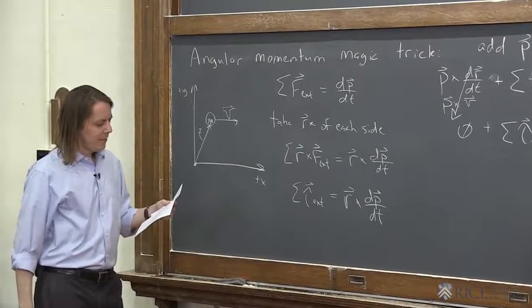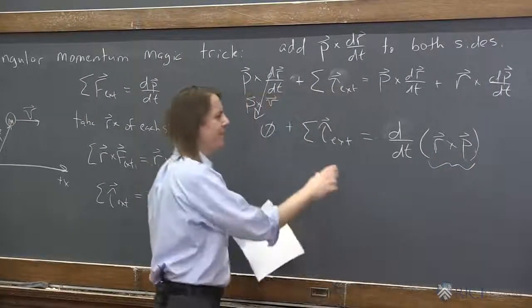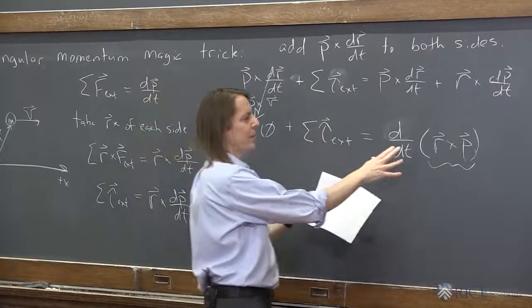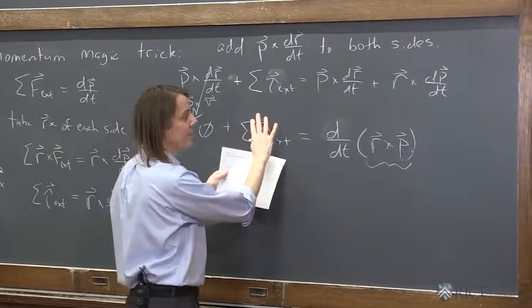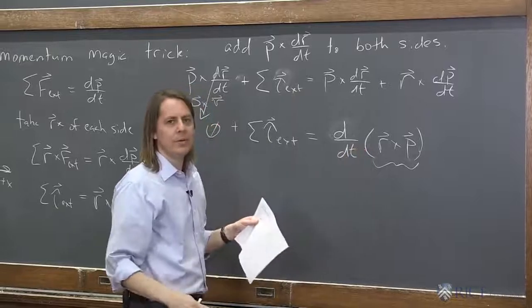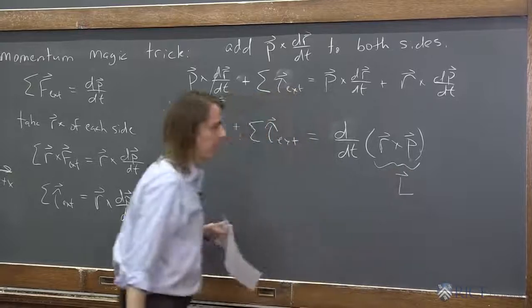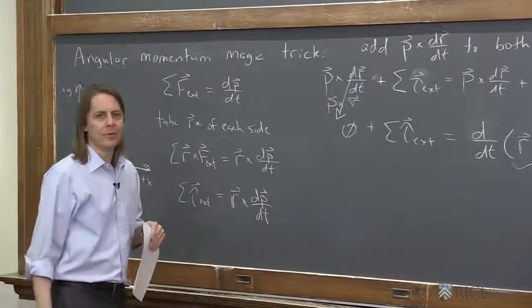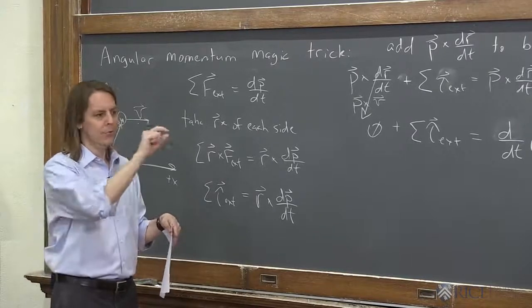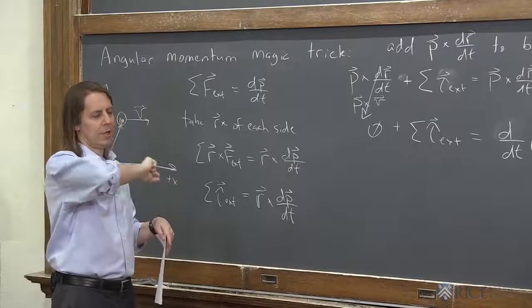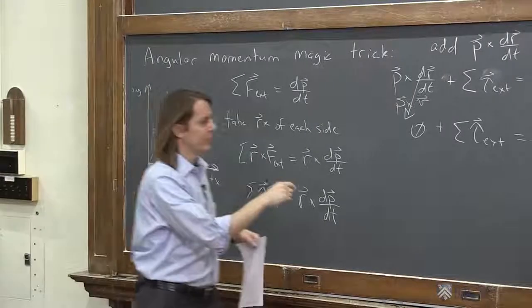But what we now have is this new thing, r cross p, and it appears that if you add up all your external torques, that will change something called r cross p. It would also appear that if there are no external torques, an isolated system, something called r cross p is going to remain constant. And r cross p is L. r cross p is the angular momentum, and it's the way you describe the angular momentum of just an isolated particle moving along, whether it's accelerating or stopped or moving in a circle, doesn't matter. Moving in a straight line, doesn't matter.